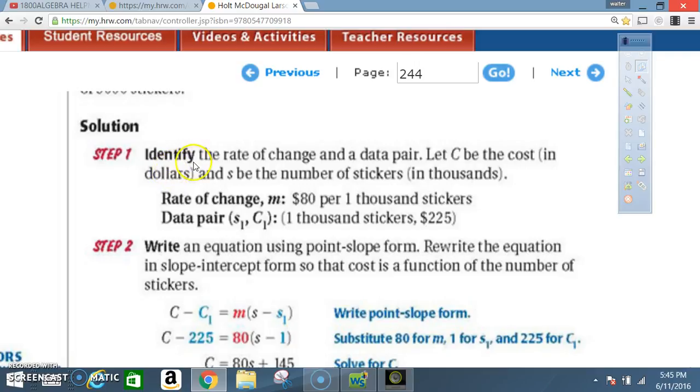Solution. Step one. Identify the rate of change and a data pair. Let C be the cost in dollars and S be the number of stickers in thousands. Rate of change M, slope, $80 per 1,000 stickers. Data pair, S1, stickers, C1, costs. So that's going to be 1,000 stickers, comma, $225.